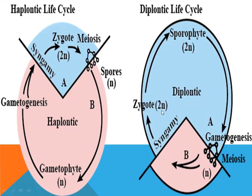Diploid organisms — human beings are diploid. The male and female, which are the sporophyte, are also diploid. In the body, gametes are formed — sperm in males, egg in females. Sperm and egg fuse in fertilization. The main organism is diploid and will be 2N. This is called the diplontic life cycle.